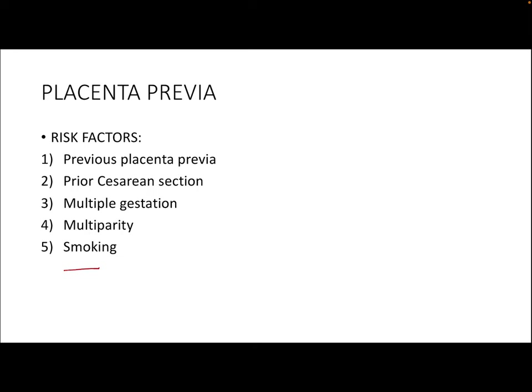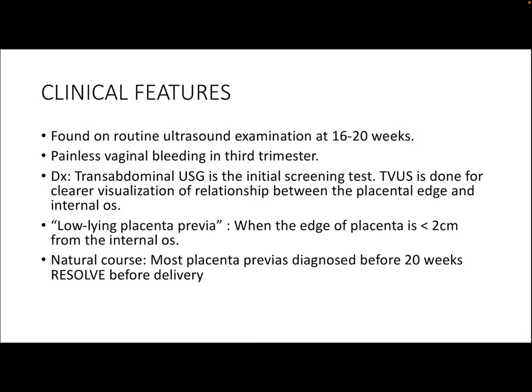In a placenta previa, the origin of bleeding is usually maternal blood, resulting in large volume but painless bleeding, and the fetal status is usually reassuring. Clinically, placenta previa is usually found on a routine ultrasound at 16 to 20 weeks of gestation. For diagnosis, we use a transabdominal ultrasound as the initial screening test, followed by a transvaginal ultrasound for clearer visualization of the relationship between the edge of the placenta and the internal os.